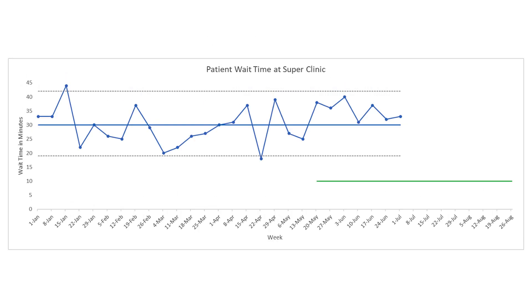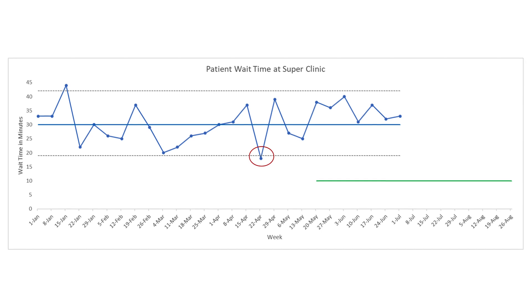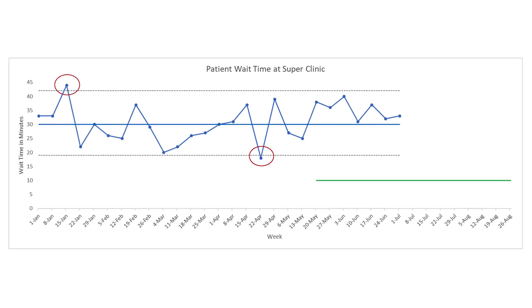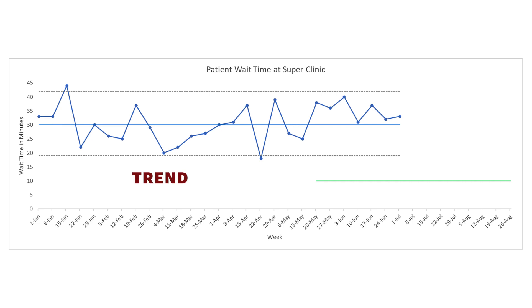There are different types of special cause variation to look for. The first: when seven or more consecutive points are on one side of the center line — these are called shifts, and are commonly what you're looking for when doing improvement work. The second: when you see a point go outside the control limits. Don't miss opportunities to learn from these — ask your team what happened that day, look for something out of the ordinary. These are called outliers, and are usually looked for in the sustainment phase of a process.